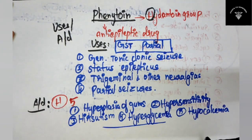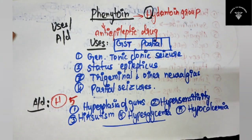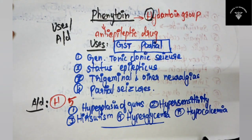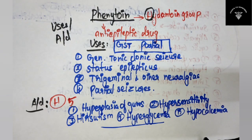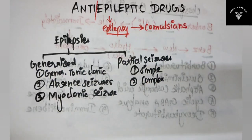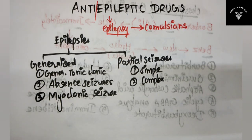This is a very simple question they might ask for 5-mark questions. That's it about anti-epileptic drugs. Do remember the barber story so that you could write the classification of anti-epileptic drugs easily.